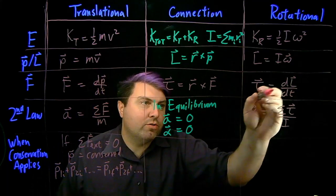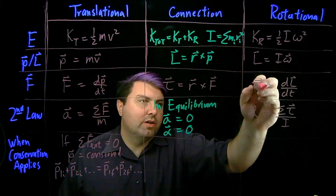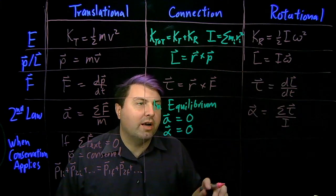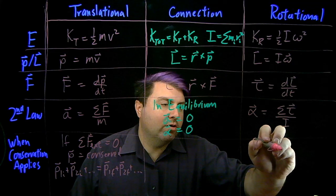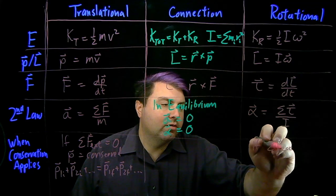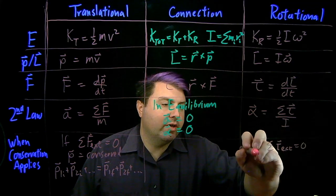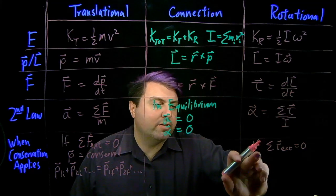If we have it that our torques, because our torques are what changes our angular momentum, so if our sum of our torque external is zero, then we can say that angular momentum, or L, is conserved.